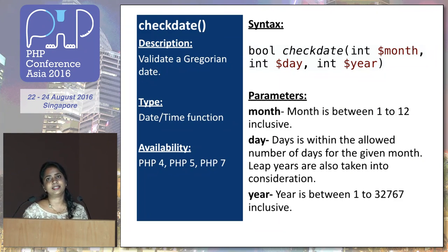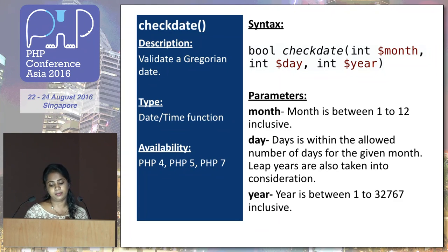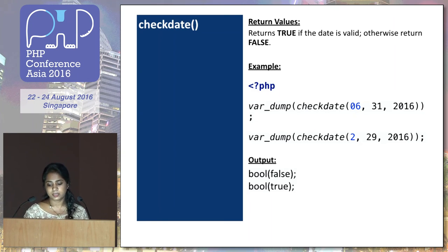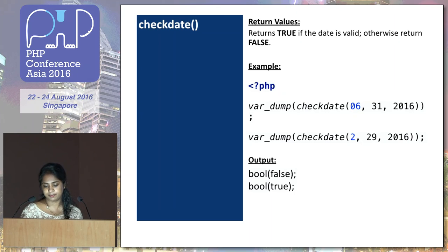Next is checkdate. This is a date/time function used to validate a Gregorian date — a Western date. It's available in PHP 4, 5, and 7. It takes three parameters: month, day, and year. It also validates leap years. It returns true if the date is valid, otherwise false. You have to define the parameters correctly, otherwise it may not return the proper result. In this example I passed June 31st 2016, and it returns false because June has only 30 days. I also checked a leap year by passing February 29th, and it returns true.